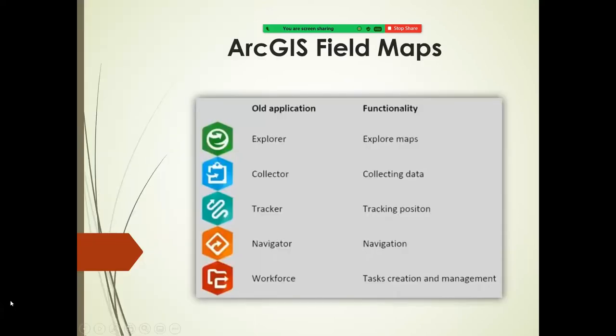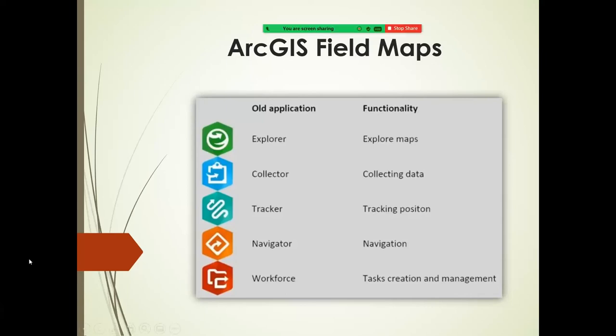What is Field Maps? It's a collection of five old mobile applications, some of which you may have used in the past. The one that probably sticks out is Collector, and Field Maps is built on the Collector application — it's the same code base. The company is pulling in features from Explorer, Tracker, Navigator, and Workforce, and those will continue to pop in as the company builds this robust application called Field Maps. In the meantime, it should look just like Collector, so if you've used that in the past, you'll feel real comfortable.